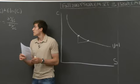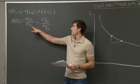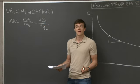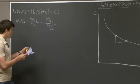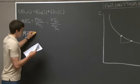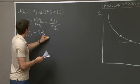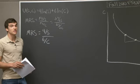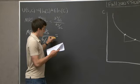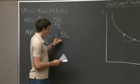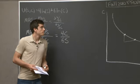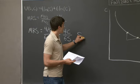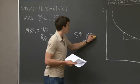To calculate this algebraically, we take the marginal utility of software divided by the marginal utility of clothes — that is, the derivative with respect to software over the derivative with respect to clothing. We find that the MRS equals 4 over S (marginal utility of software) divided by 6 over C (marginal utility of clothes). Solving through, our MRS equals 4C over 6S. When S increases, since it's in the denominator, the MRS decreases.